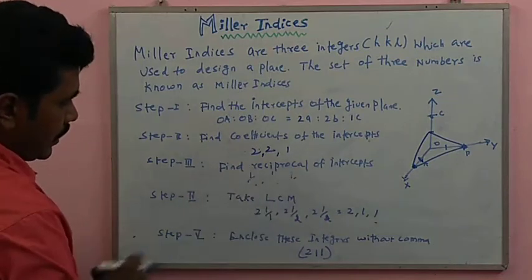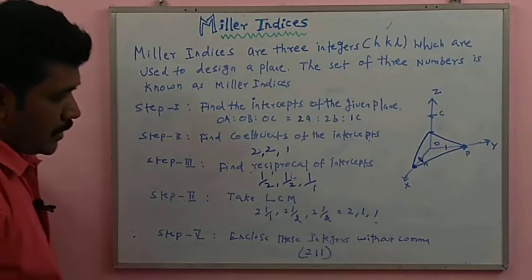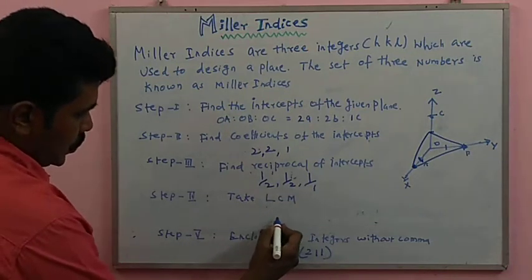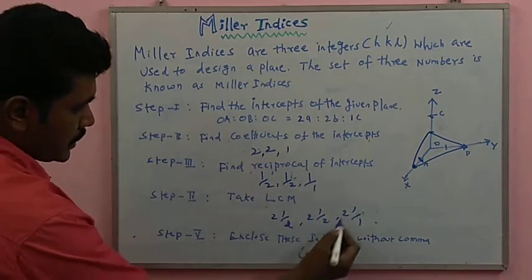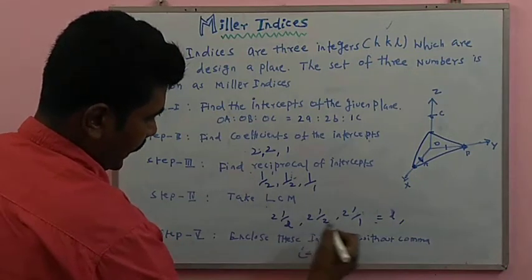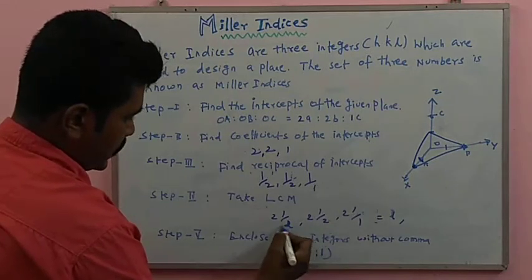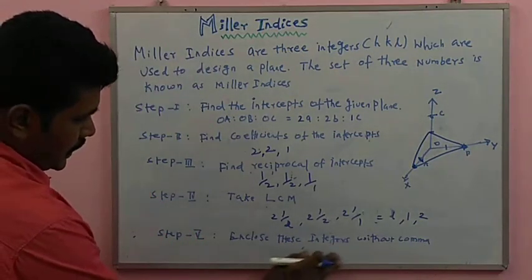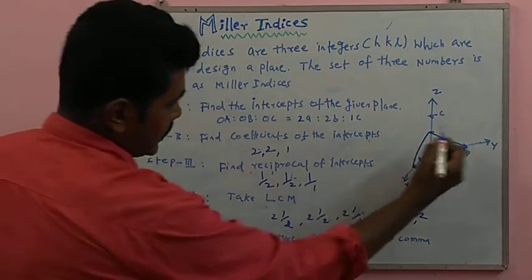Find the reciprocal values: 1/2, 1/2, and 1/1. Take the LCM — the least common multiple is 2. So: 2×(1/2), 2×(1/2), 2×(1/1). After cancellation, the result is 1, 1, 2. The Miller indices are therefore (1 1 2).